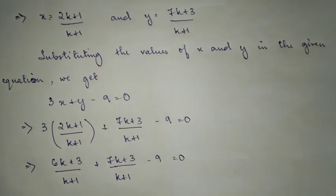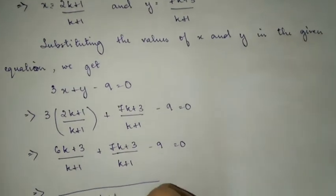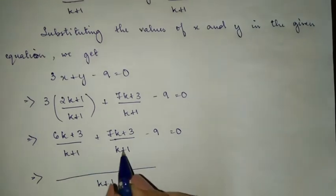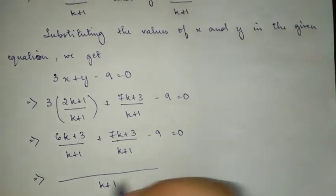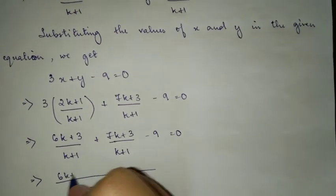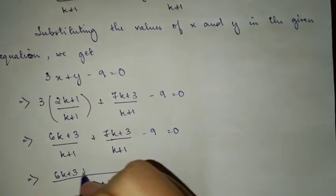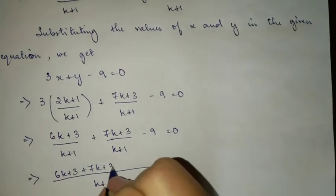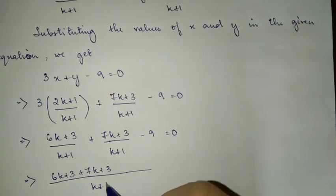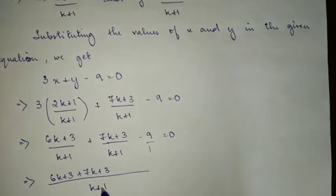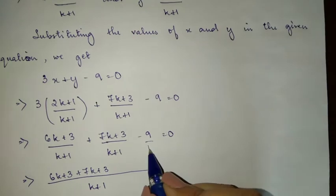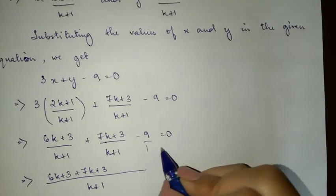Now taking the LCM as (k + 1). The LCM is (k + 1). Multiply (k + 1) throughout. When we multiply, minus 9 times (k + 1). Multiplying (k + 1) throughout gives 0.